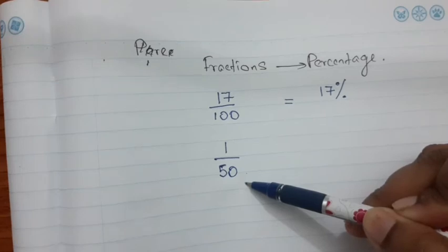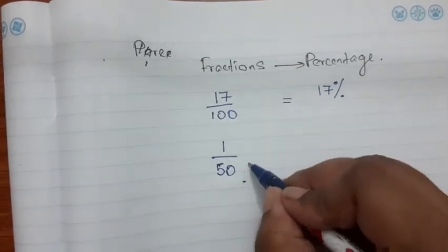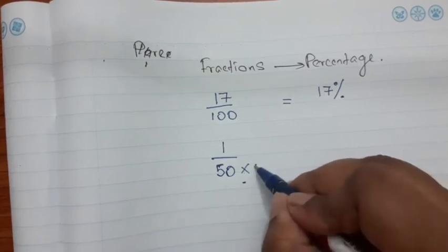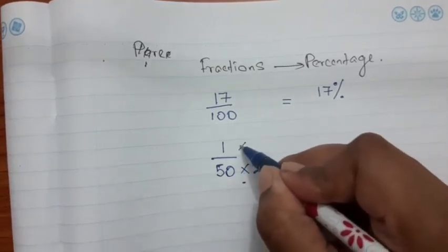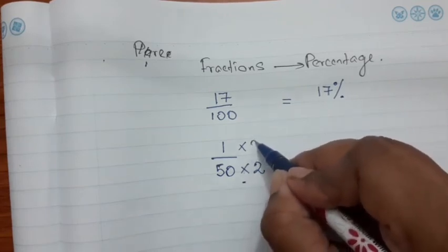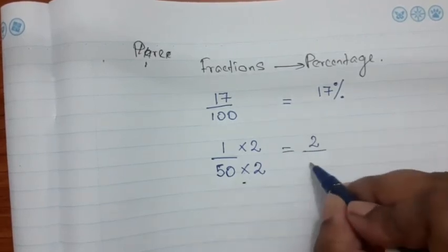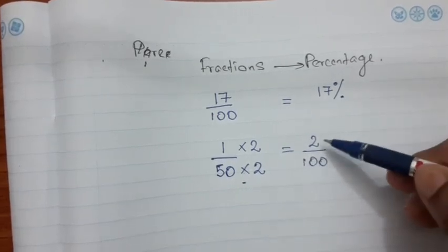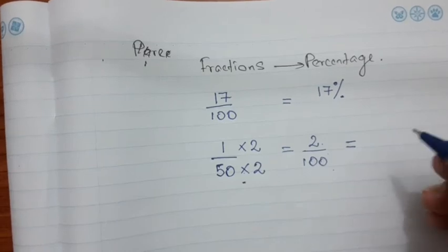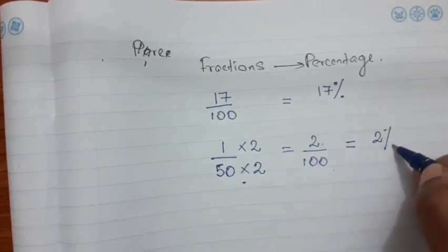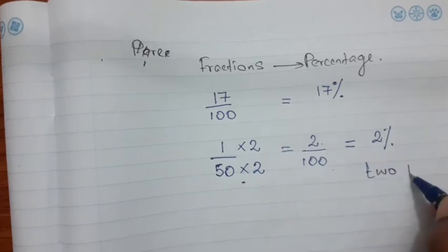Since 1/50 is not out of 100, we need to make the denominator 100 using equivalent fractions. To make the denominator 100, multiply it by 2 — and you must also multiply the numerator by 2. So 1×2 = 2 and 50×2 = 100, giving us 2/100, which is simply 2%.